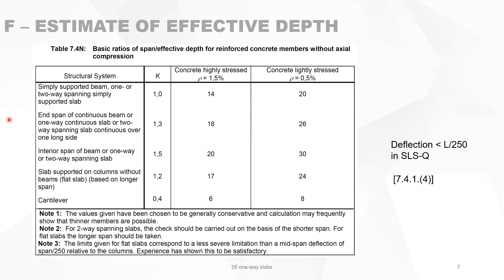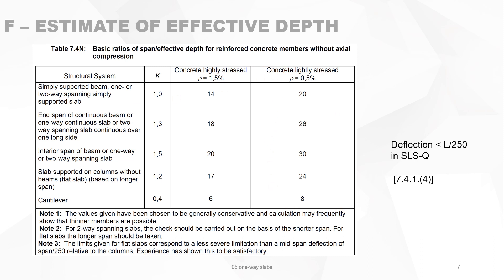You can start by estimating the needed depth of a slab using the slenderness ratios. Bringing them together in one table, for a one- or two-way simply supported slab it is L over 14 or L over 20. For a cantilever, such as a balcony, it will be L over 6 or L over 8.